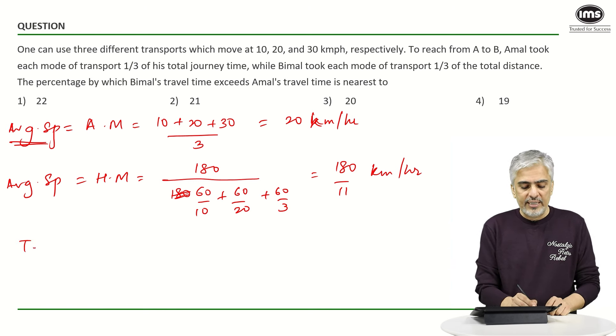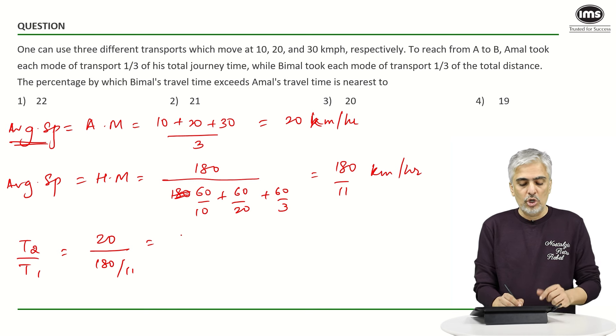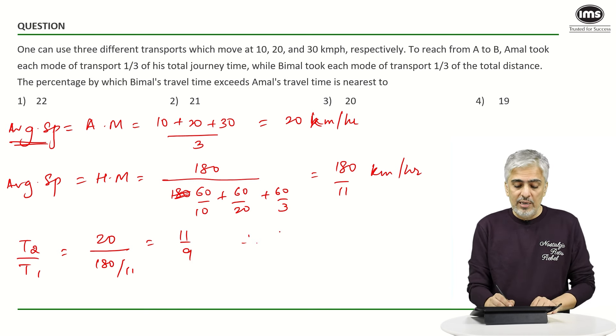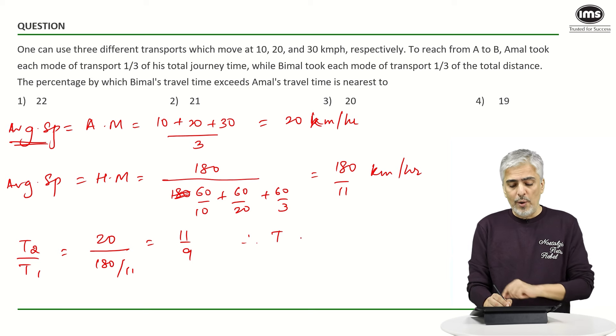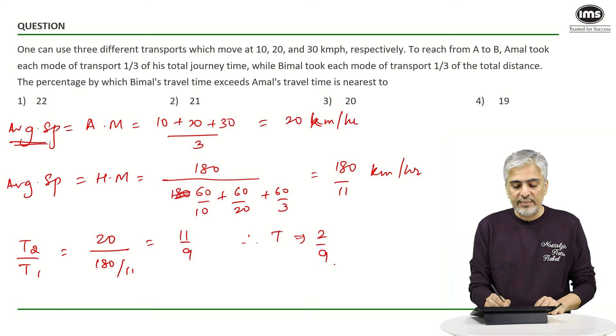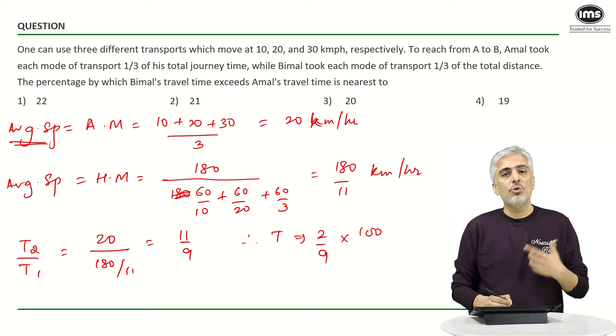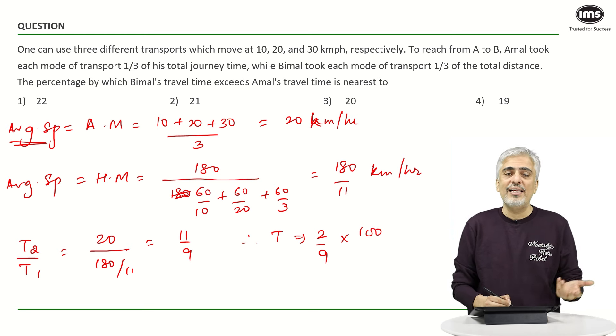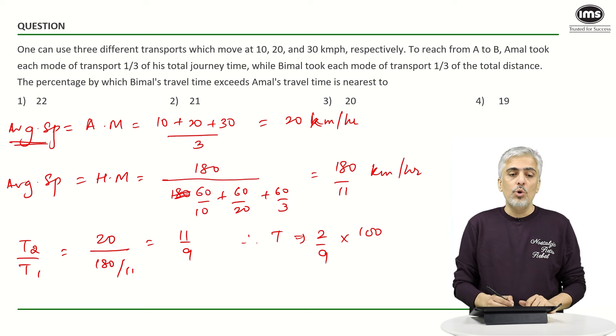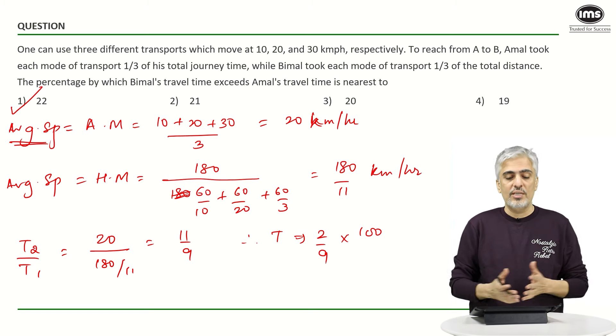Then the last part is same that T2 upon T1 will be nothing but 20 upon 180 upon 11. That becomes on solving this, this becomes 11 by 9. Therefore time taken by Bimal will be 2 by 9 more than the time taken by Amal. 2 by 9 as a percentage is how much? We should know your fractions 1 by 9, 11.11. So 2 by 9, 22.22. Closest option is the first option which is your answer.